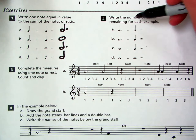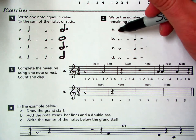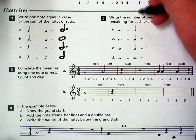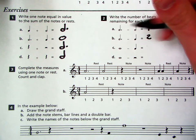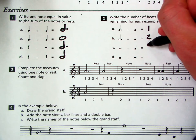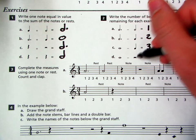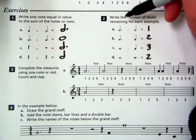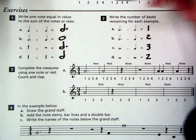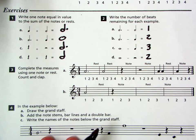Alright. Question two. Write the number of beats remaining for each example. So three. Alright. This is where three minus two. That would be one. Three minus one would be two. Four minus one would be three. And then four minus two would be two. Make sure to read the directions. Sometimes they want you to write the note. Sometimes they want you to write the number of beats. You just got to read and know what they want.